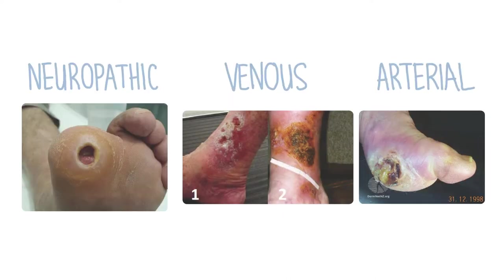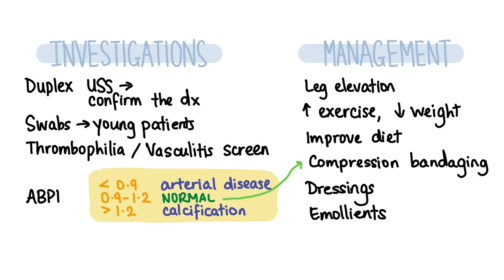Other types of ulcers include neuropathic ulcers, which are painless ulcers found on pressure areas commonly seen in people with diabetes, and arterial ulcers which have well-defined borders, a necrotic base and a punched-out appearance. Risk factors for venous ulcers include increasing age, pregnancy, obesity, and history of pre-existing venous incompetence or venous thromboembolism. Underlying venous insufficiency should be confirmed by duplex ultrasound. If infection is suspected, consider swabs for microbiology. Consider thrombophilia and vasculitic screening in young patients with a suspicion or family history of prothrombotic or autoimmune diseases. An ankle brachial pressure index (ABPI) is important in non-healing ulcers to assess for poor arterial flow and to determine if compression therapy is suitable.